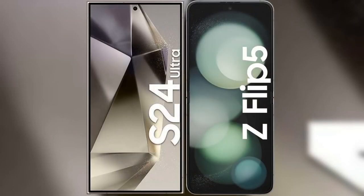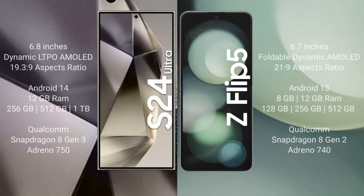I will compare the new Samsung Galaxy S24 Ultra with the Samsung Galaxy Z Flip 5. The Samsung Galaxy S24 Ultra comes with a 6.8-inch Dynamic LTPO AMOLED display with an aspect ratio of 19.3:9. The Samsung Galaxy Z Flip 5 has a 6.7-inch foldable Dynamic AMOLED display with an aspect ratio of 21.9.